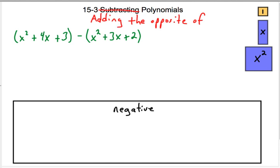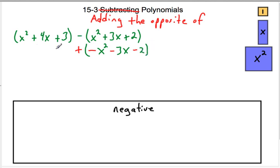What I want to do instead of subtracting x squared plus 3x plus 2 is I really want to add the opposite of everything in the parentheses. So what I really want to do is add negative x squared, minus 3x, and minus 2. So I have x squared plus 4x plus 3 — we can just keep that there — but then instead of subtracting I'm going to add the opposite of everything that was in the parentheses.